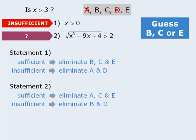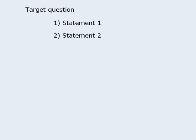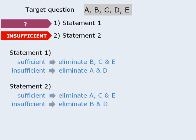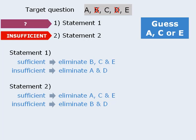For the record, the correct answer here is C, and I will leave it to you to confirm this. Let's look at some more examples. For this question, let's say that we are able to determine that statement 2 is not sufficient, but we are unable to determine whether or not statement 1 is sufficient. Now that we must guess, we'll use the elimination method to help reduce our guessing options. When statement 2 is not sufficient, we can eliminate answer choices B and D. So we will guess A, C, or E.